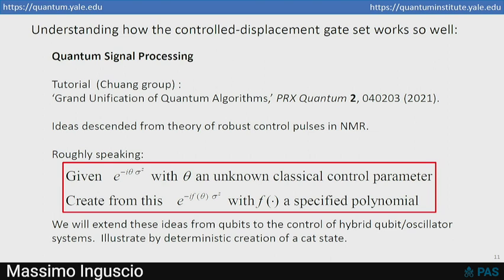And the ideas of quantum signal processing are directly descended from robust control pulses and nuclear magnetic resonance. And roughly speaking, the idea is I'm going to give you a unitary, in this case, rotation around the z-axis by an angle theta. And the z-axis is well-defined, but the rotation angle, the classical control parameter, is uncertain. And given that unitary, and given that unitary and the chance to apply multiple times, can you create from that a different unitary.